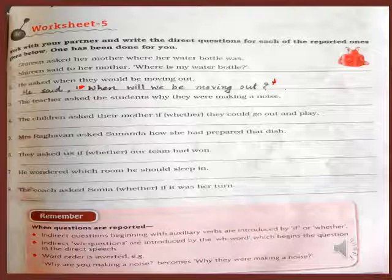Remember, dear students: when questions are reported, indirect questions beginning with auxiliary verbs are introduced by 'if' or 'whether'. Indirect WH questions are introduced by the WH word which begins the question in the direct speech, and word order is inverted. Example: inverted comma open, 'Why are you making a noise?' inverted comma close becomes: 'Why they were making a noise?' question mark and inverted comma close.